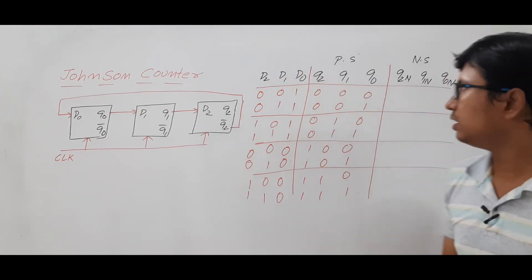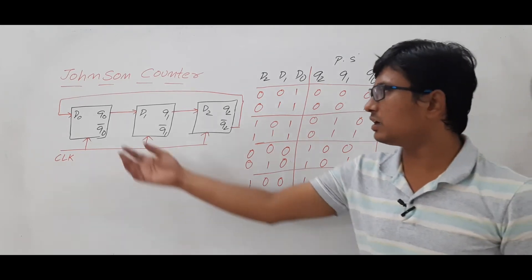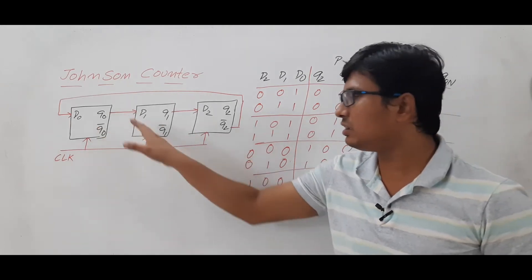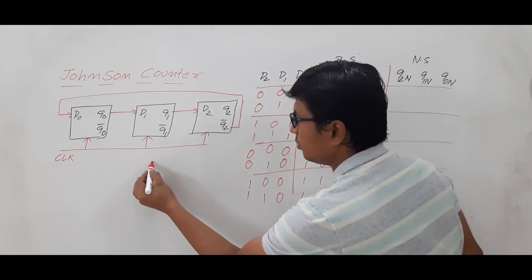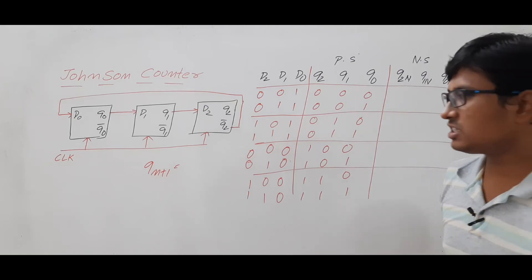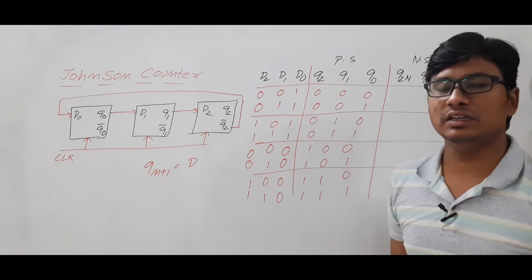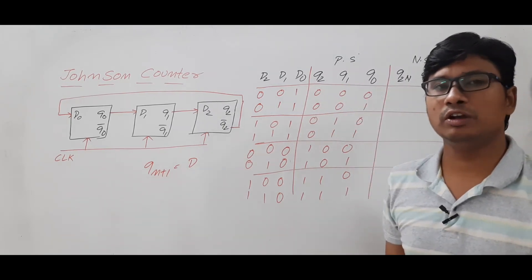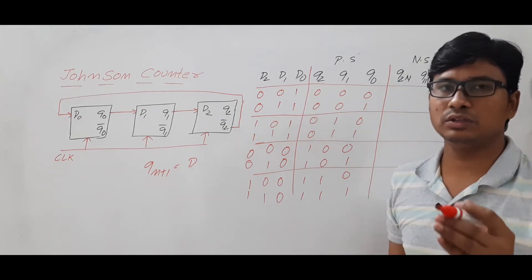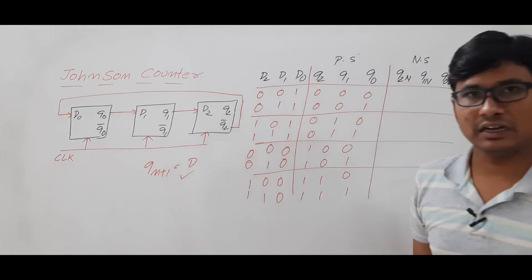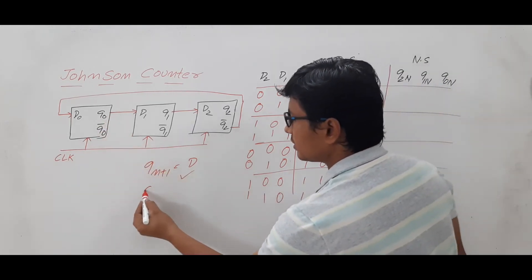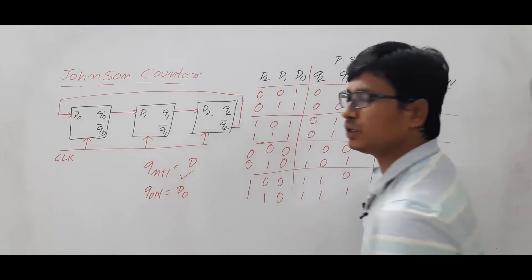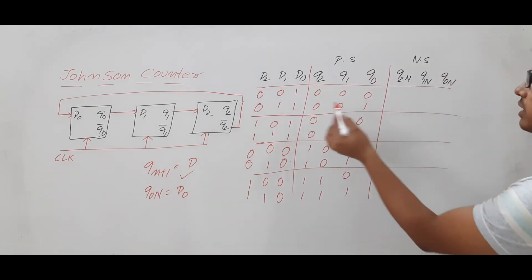Now we calculate the next states Q0N, Q1N, and Q2N. To do this we use the characteristic equation of the D flip-flop: Q(n+1) = D, meaning the next state equals the current D input. You can also verify this from the D flip-flop truth table. Therefore Q0N = D0, which gives values: 1, 1, 1, 1, 0, 0, 0, 0.